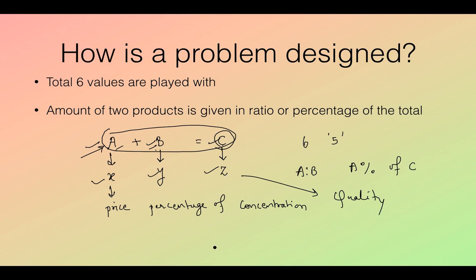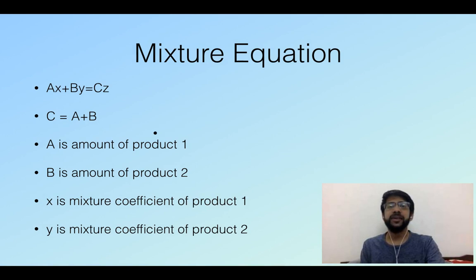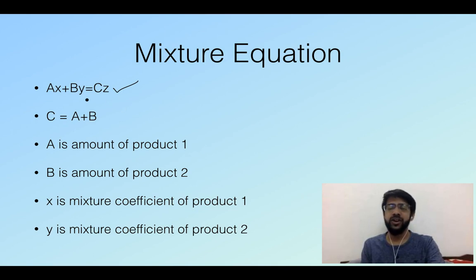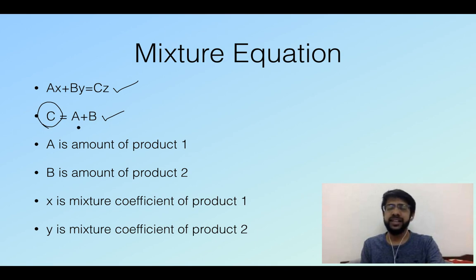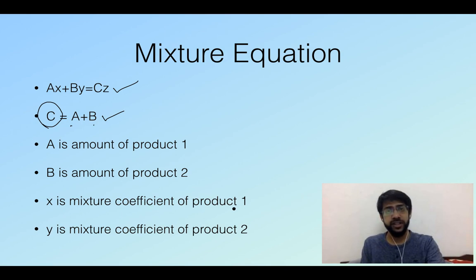Mixture coefficients can be price, percentage of concentration, or something else that represents quality. A mixture equation can be written as: quality of A times amount of A, plus quality of B times amount of B, equals quality of the mixture times total mixture amount. This is essentially an equilibrium equation of quality and quantity. A is the amount of product 1, B is the amount of product 2, x is the mixture coefficient of product 1, and y is the mixture coefficient of product 2.